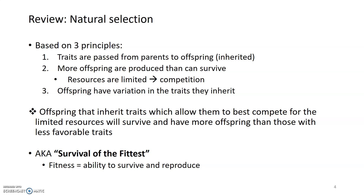Natural selection is also known as survival of the fittest, where fitness is a measurement of an organism's ability to survive and reproduce in the environment. Offspring that inherit traits allowing them to best compete for resources will survive longer, have more babies, and pass favorable traits to the next generation. Those with less favorable traits won't be able to compete, won't survive, and those traits will leave the population. We'll now discuss how natural selection relates to the theories on aging and longevity.